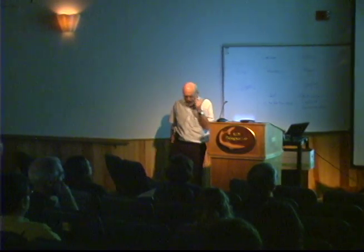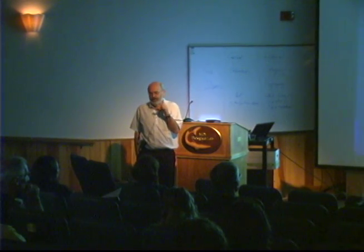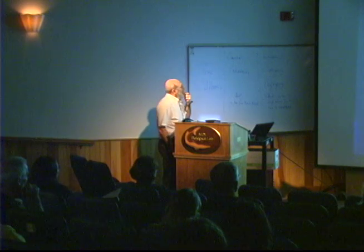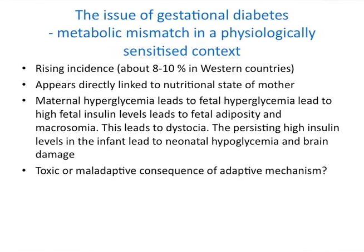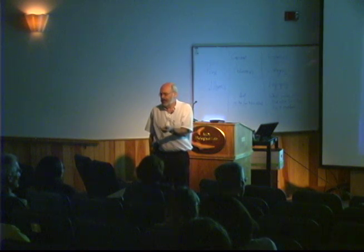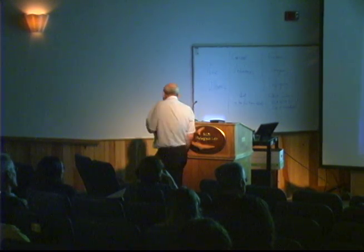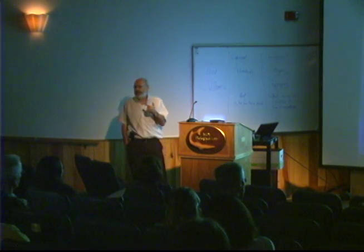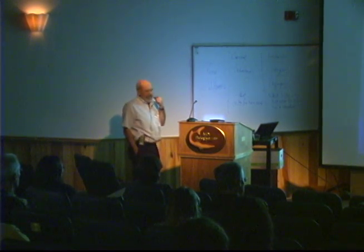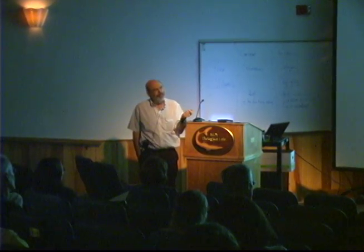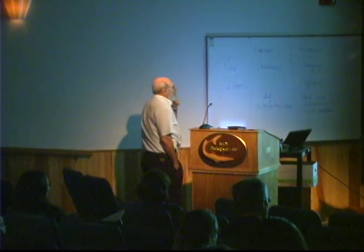I want to dive into one specific example that interests me immensely: the phenomenon of gestational diabetes. Gestational diabetes is a form of type 2 diabetes that appears in pregnant women. They don't have diabetes when they start their pregnancy; they have diabetes during pregnancy, it resolves after pregnancy, but they have a higher chance of developing diabetes within the next 5 to 10 years, and will probably have diabetes in every future pregnancy. Its incidence in Western countries is roughly 8 to 10% of pregnant women.